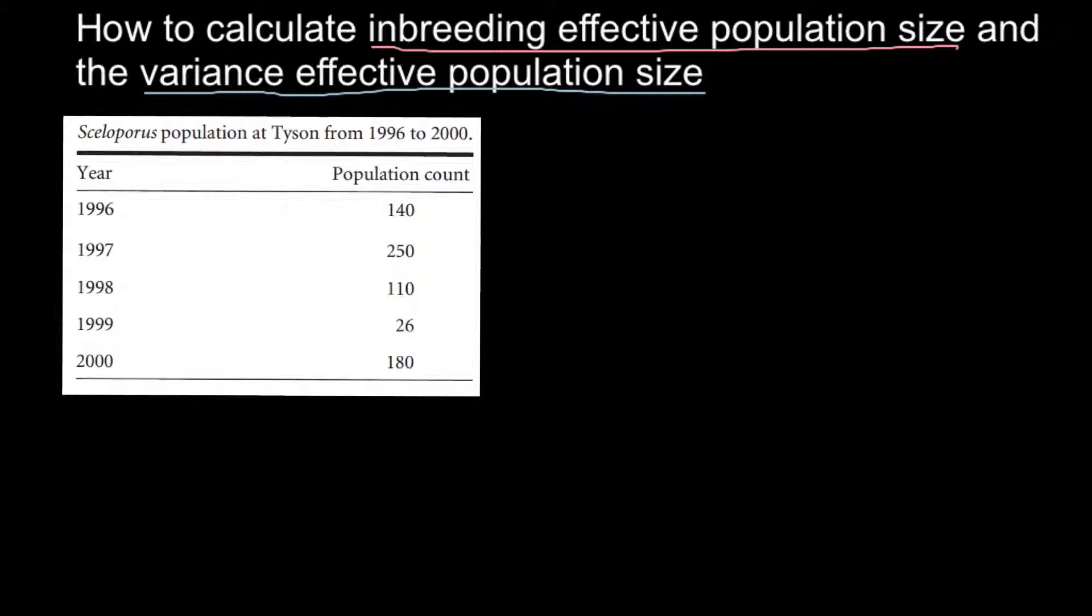The variance effective population size, on the other hand, is when we have one population that diverges into two populations. When two populations separate they start to accumulate different frequencies in the gene pool of the alleles, and mutations can occur due to environmental factors such as radiation, or the gene pool can change due to migration and emigration. Here is the first formula for the inbreeding effective population size.